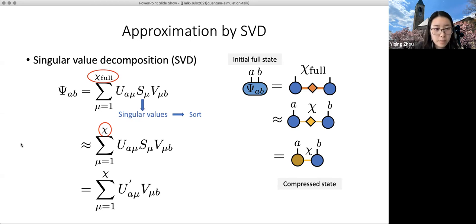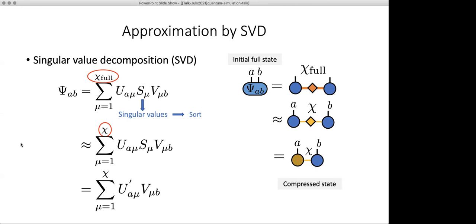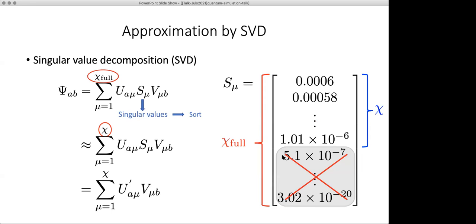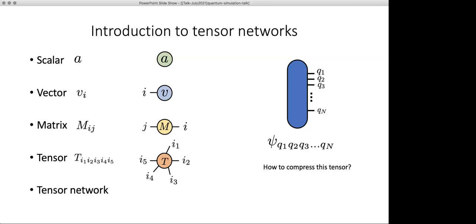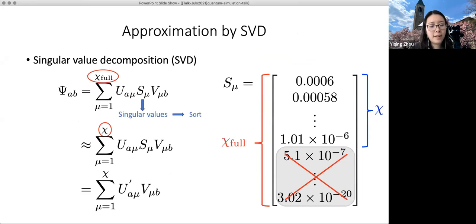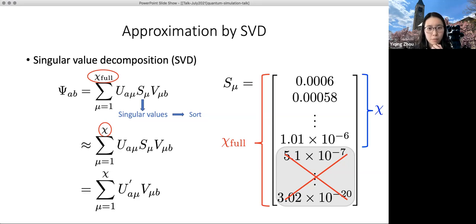We can perform a sequence of singular value decompositions — pulling out one qubit index at a time — all the way until we have one physical index attached to each site of the MPS. In the first step, q2 through qn become one collective index. The advantage of this MPS format is that it drastically reduces computational complexity: storing the state as a whole huge tensor scales exponentially with the number of qubits, but the MPS format scales only polynomially in N. The controlling parameter of MPS is the so-called bond dimension chi. If chi is allowed to grow exponentially up to 2^N, the MPS can represent any state exactly.